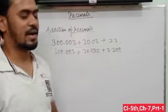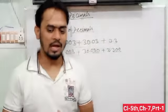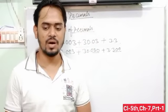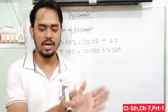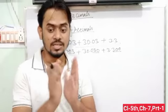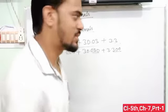Step 2: Write all the decimal numbers one below the other, keeping the decimal point as well as the digits having the same place value in the same column.